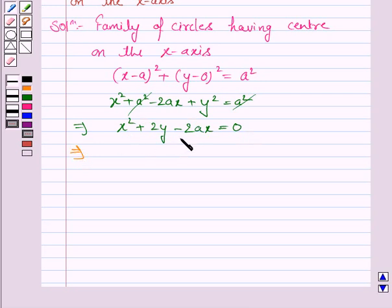So, differentiating this with respect to x, we have 2x + 2y dy/dx - 2a = 0.